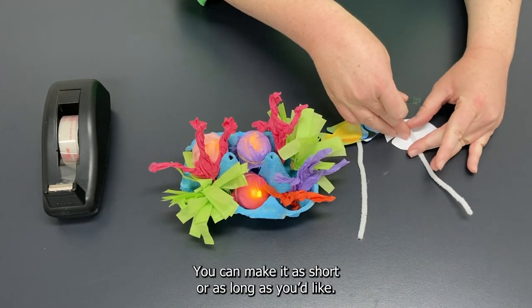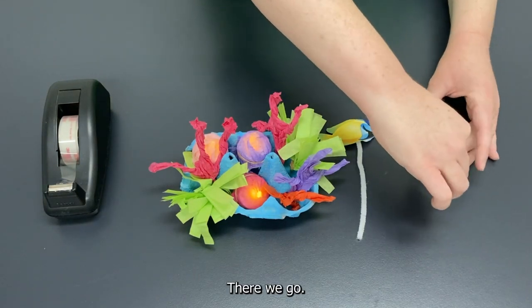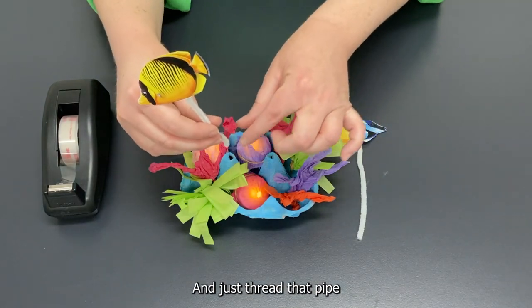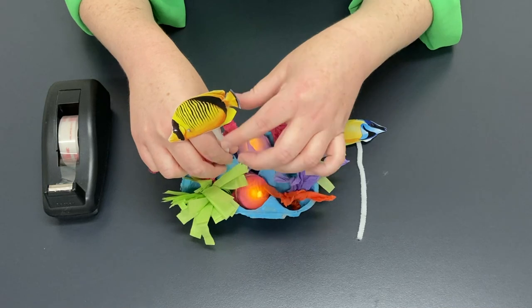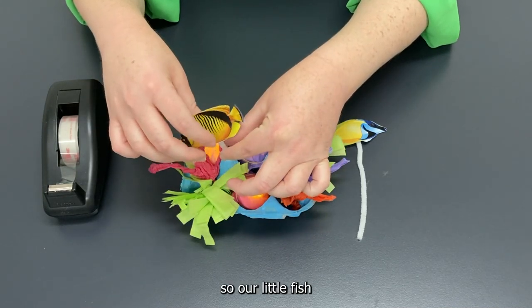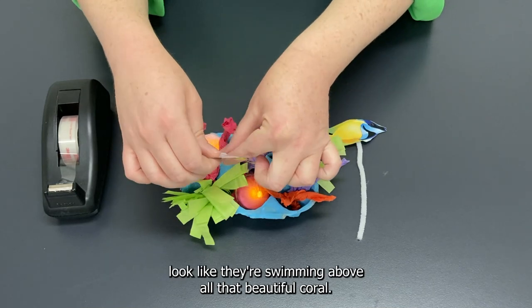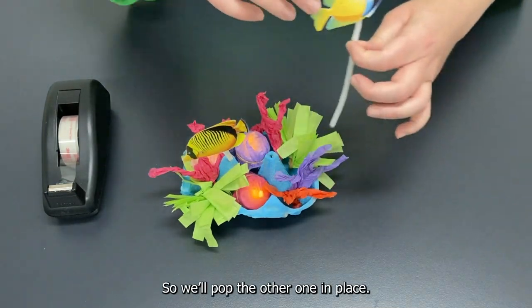You can make it as short or as long as you'd like. There we go. And just thread that pipe cleaner through the hole that we've made in the egg carton. So our little fish look like they're swimming above all that beautiful coral. So we'll pop the other one in place.